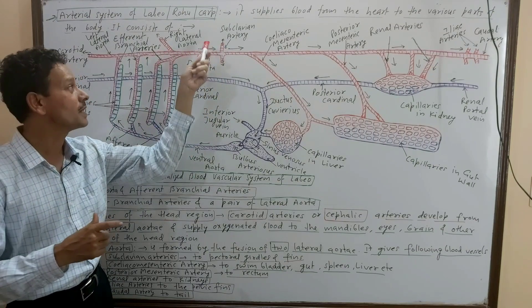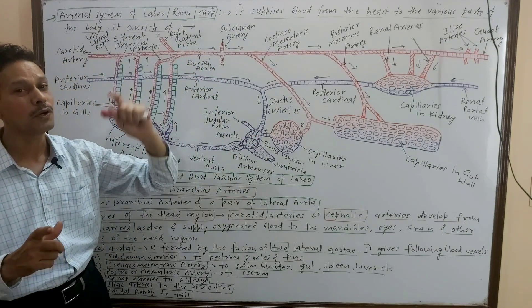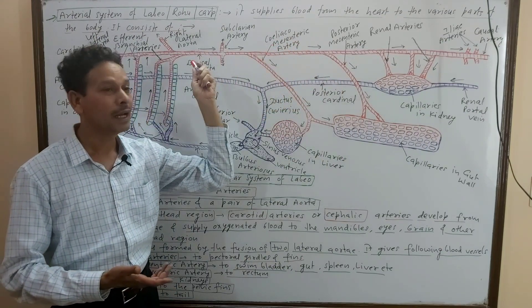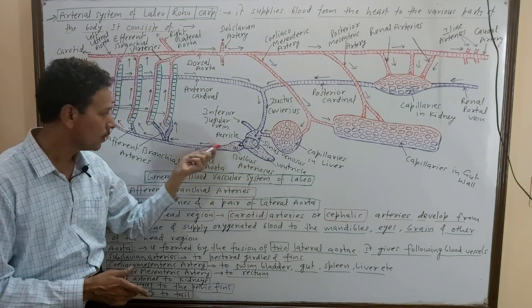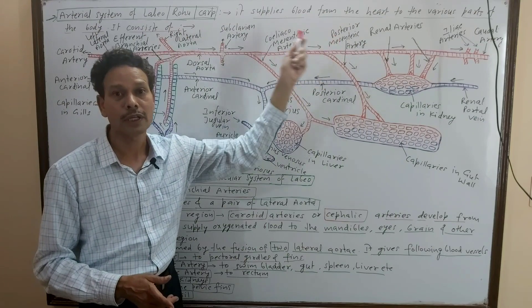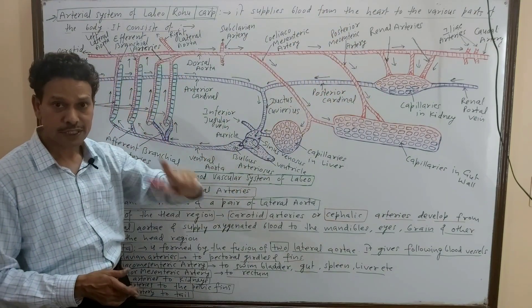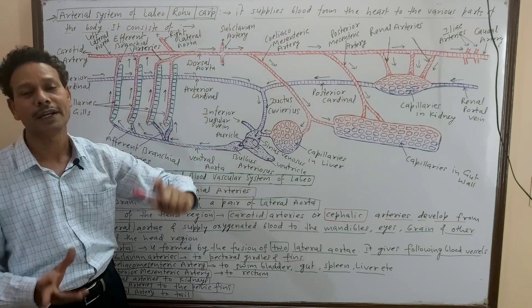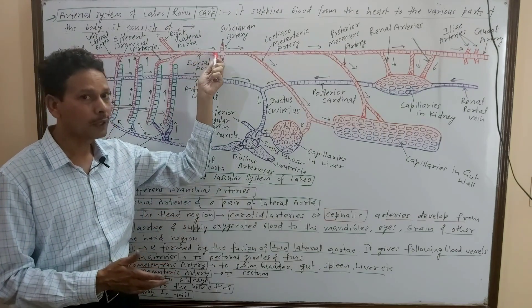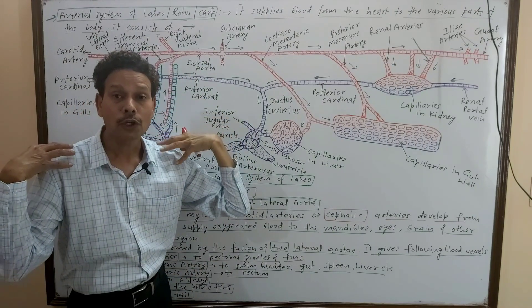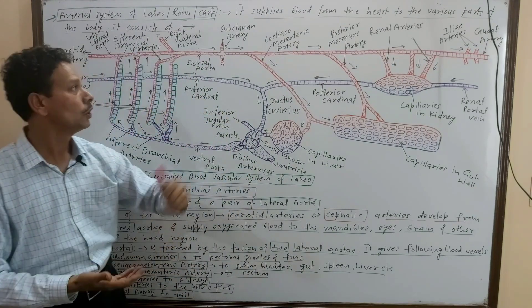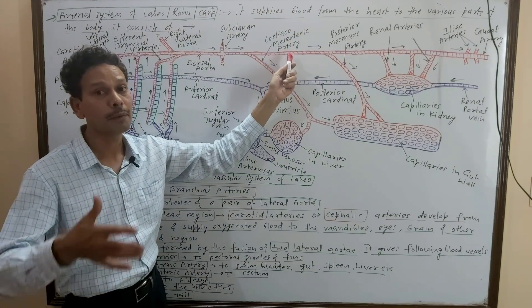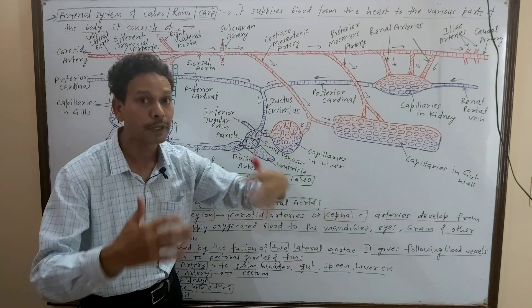Both the right and left lateral aortas unite and collectively constitute a large blood vessel called the dorsal aorta. This is very important for exams. In vertebrates, the ventral aorta carries blood in the forward direction, while the dorsal aorta carries blood in the backward direction. From the dorsal aorta arise a pair of subclavian arteries going to the pectoral region, pectoral fins, and pectoral girdle. Then the celiac mesenteric artery supplies the anterior part of the alimentary canal, the gut, the liver, the spleen, and the swim bladder.